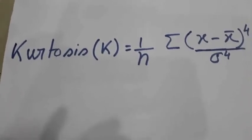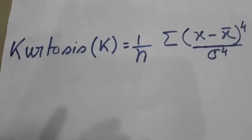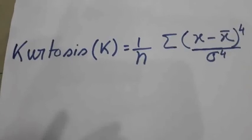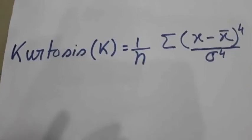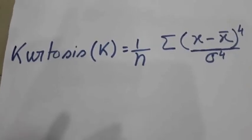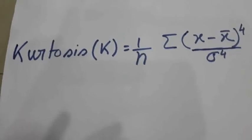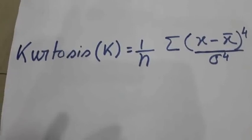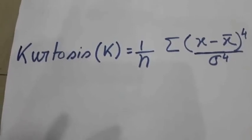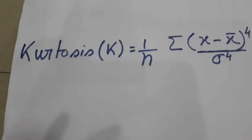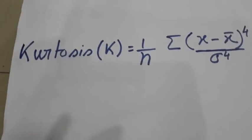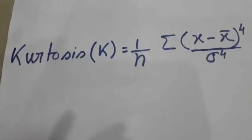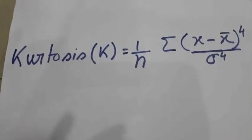This kurtosis measures the peakness or flatness of a distribution. If the value of the kurtosis is positive, it indicates a thin pointed distribution. But if the kurtosis is negative, it indicates a broad flat distribution.